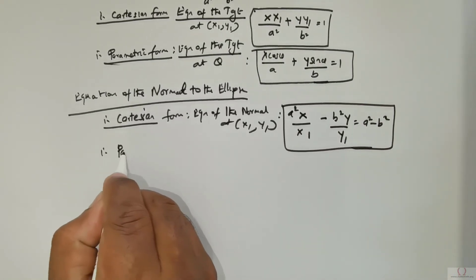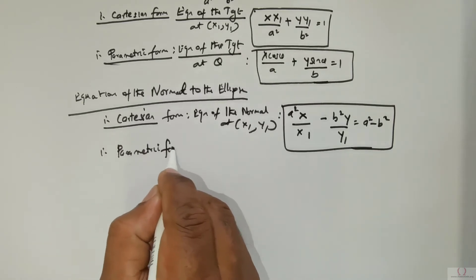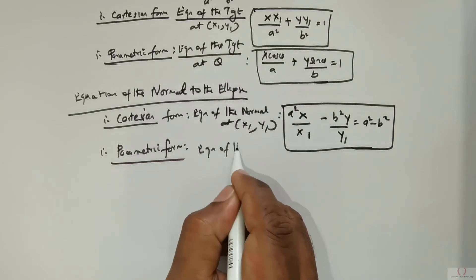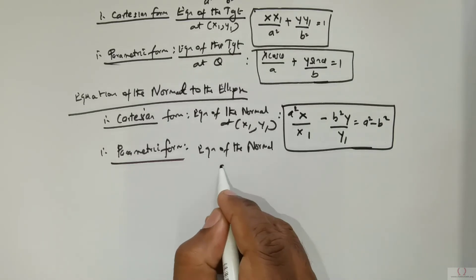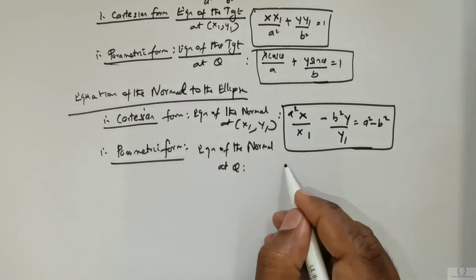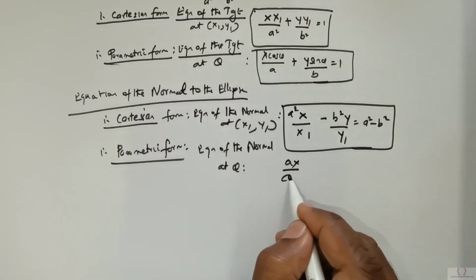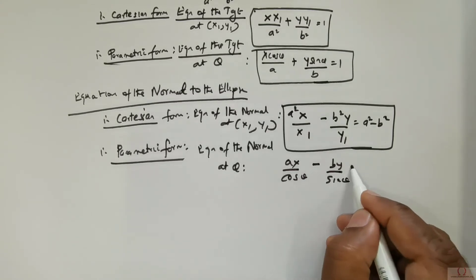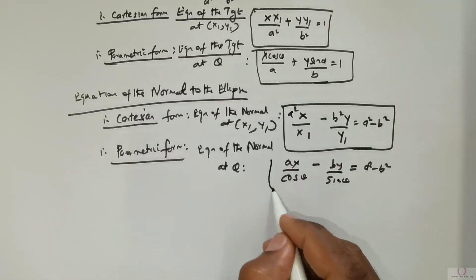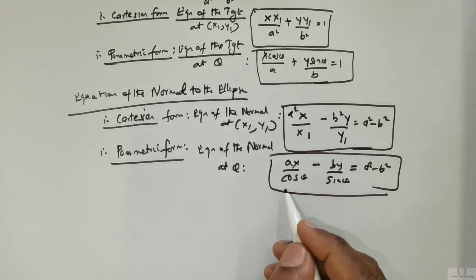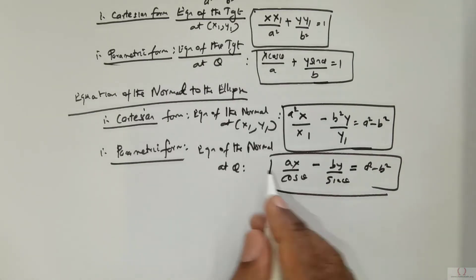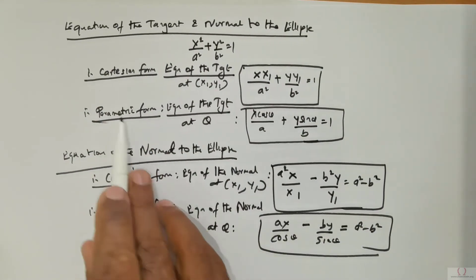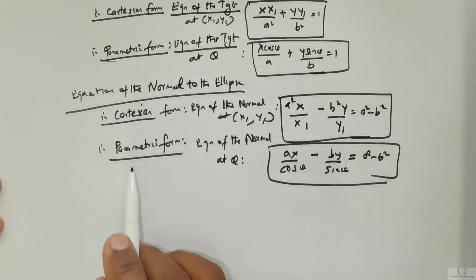In parametric form, the equation of the normal at theta is given as a x over cos theta, negative b y over sine theta, is equal to a squared negative b squared. So this covers the equation of the tangent and normal to the ellipse in Cartesian form and parametric form.